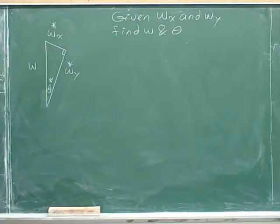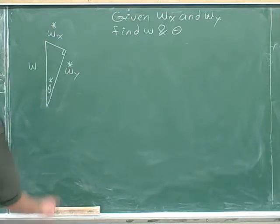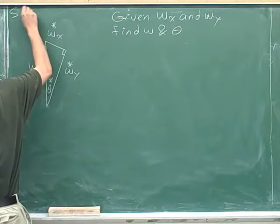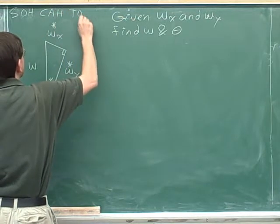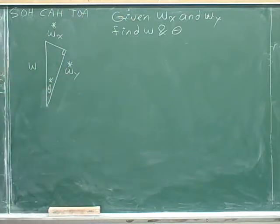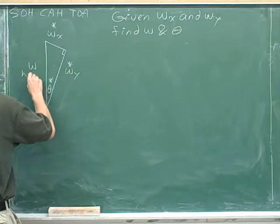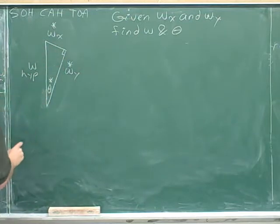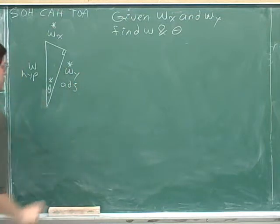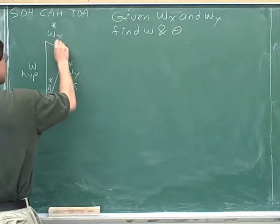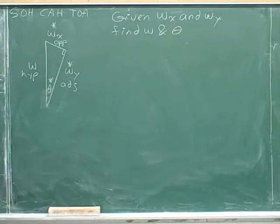Now would be a good time to write down our SOHCAHTOA mnemonic. Let's label the hypotenuse, which is opposite to the right angle, and the adjacent side, which is adjacent to theta marked with an asterisk, and the opposite side. W sub x is opposite to theta.